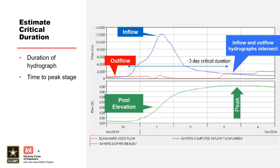For example, snow melt driven floods typically have a longer critical duration than rainfall driven floods. We are usually interested in modeling extreme floods, which will usually have a relatively short critical duration. In the graphic shown, the blue line displays the inflow hydrograph, the red line shows the outflow hydrograph, and the green line shows the pool elevation hydrograph. Notice that the peak stage will always occur at the point where the inflow and outflow hydrographs intersect.